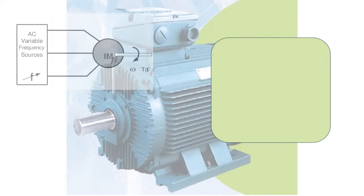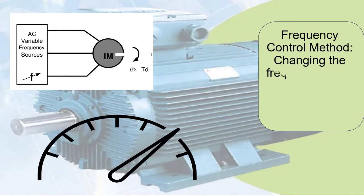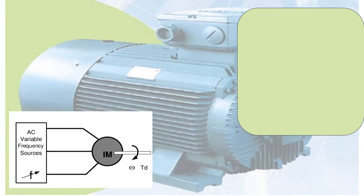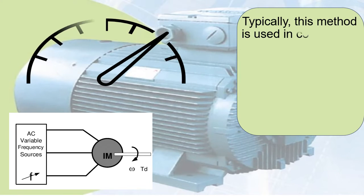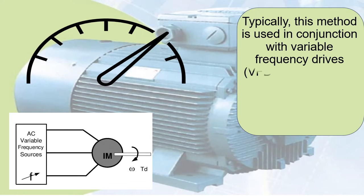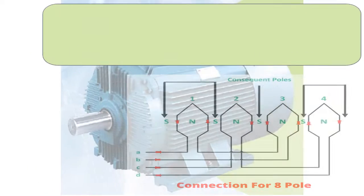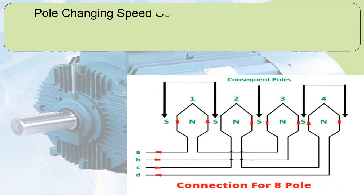Frequency Control Method: Changing the frequency of the power supply alters the speed of an induction motor. Typically, this method is used in conjunction with Variable Frequency Drives to control the motor's speed by adjusting the frequency of the AC power.